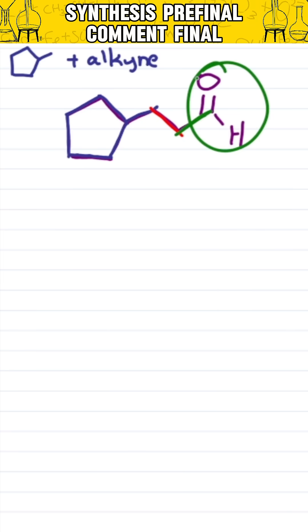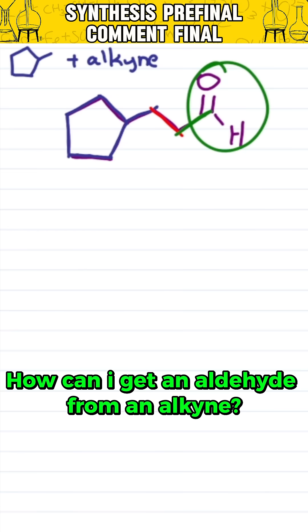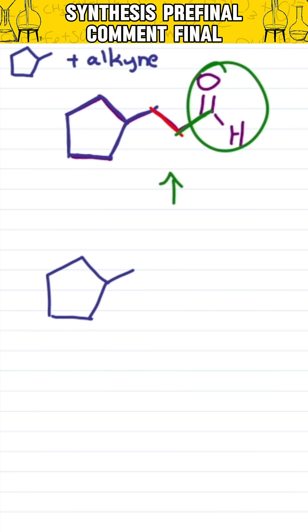Knowing that this came from an alkyne, which is great for chain elongation, how can I get an aldehyde from an alkyne? Hydroboration. Telling me that one step back I had my ring, that extra carbon, and the alkyne.